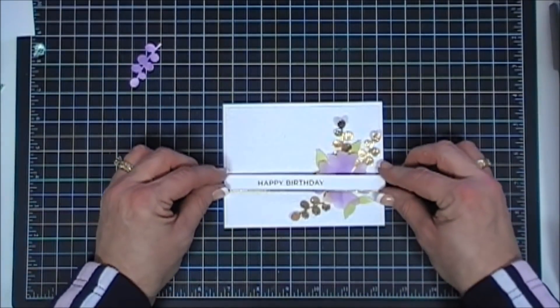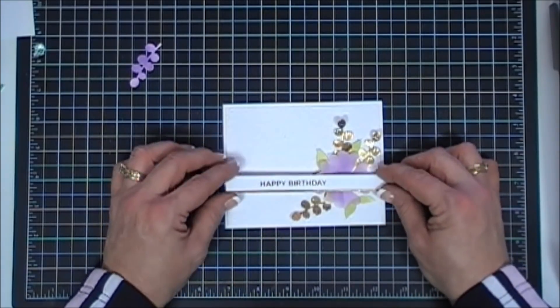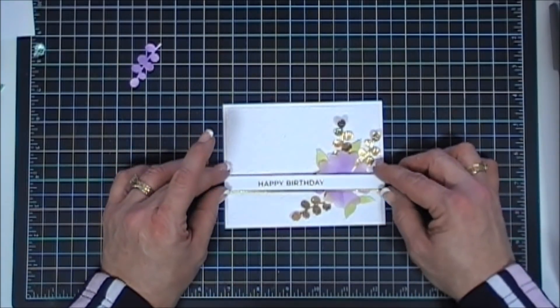Lovely. And then we'll just remove the release paper off of our foam tape from our sentiment and place that over our flower and it fits beautifully.